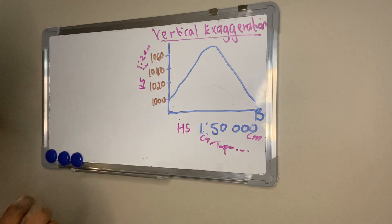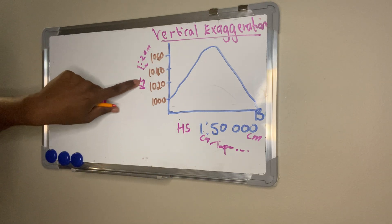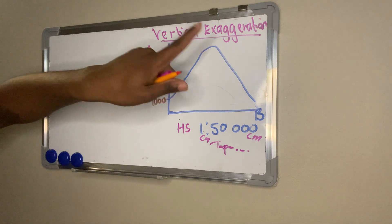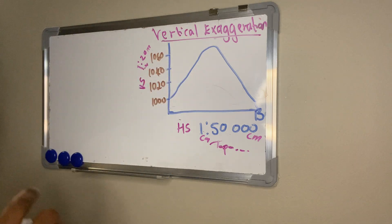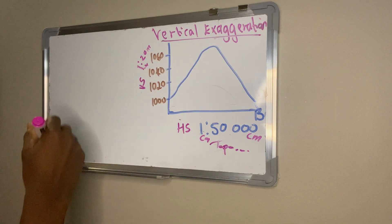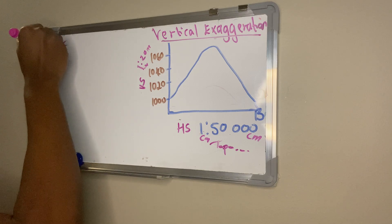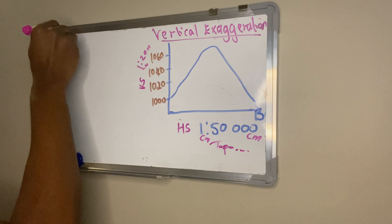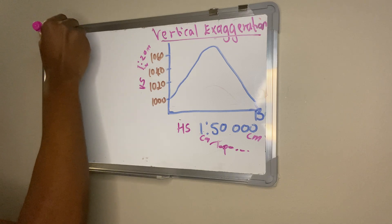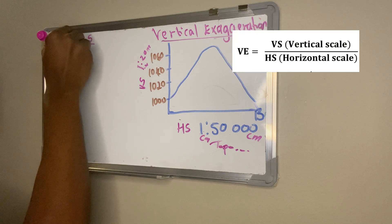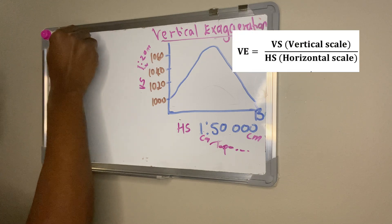For this calculation we are going to calculate how many times this cross section has been exaggerated. The formula for vertical exaggeration (VE) is: VE equals vertical scale (VS) over horizontal scale (HS).